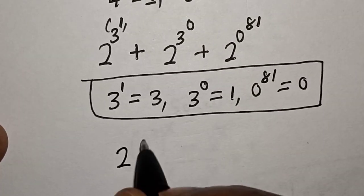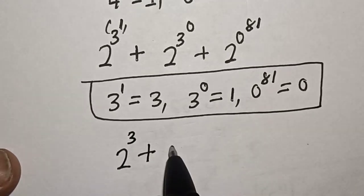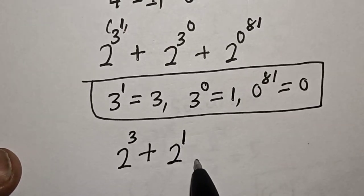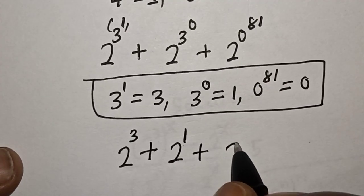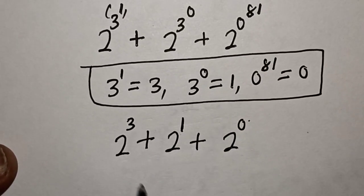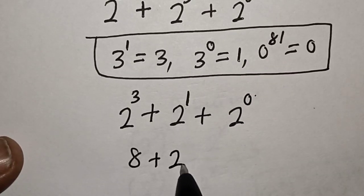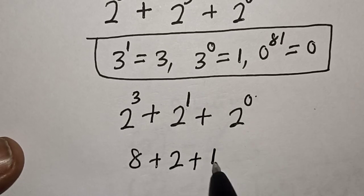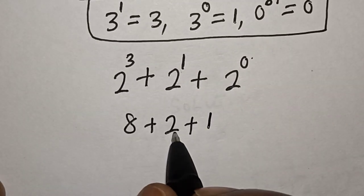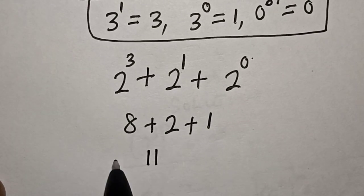We have 2 raised to power 3, plus 2 raised to power 1, plus 2 raised to power 0. Now 2 raised to power 3 is 8, plus 2 raised to power 1 is 2, plus 2 raised to power 0 is 1. Let's add everything together: 8 plus 2 is 10, plus 1 is 11.